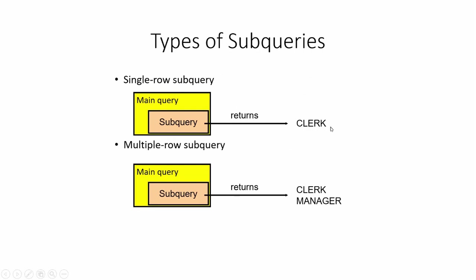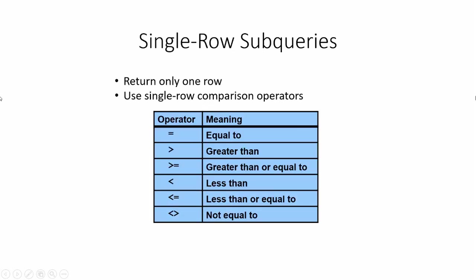If your subquery returns only one record — for example, 'Clerk' — it is a single-row subquery. If it returns more than one record, it is a multiple-row subquery. The single-row subquery operators are: equal to (=), greater than (>), greater than or equal to (>=), less than (<), less than or equal to (<=), and not equal to (<>).